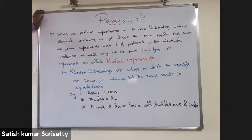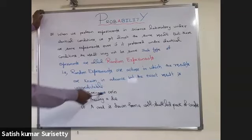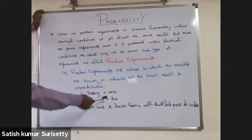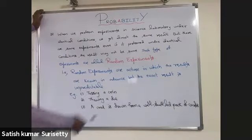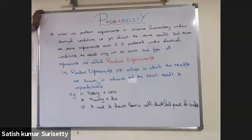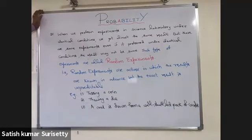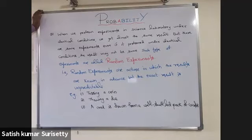Random experiments are actions in which the possible results are known in advance, but the exact result is unpredictable. For example, when tossing a coin, you know that either head or tail will come, but you don't know exactly which one. When throwing a die, you know a number from one to six will come, but not the exact number. Similarly, when drawing a card from a well-shuffled pack of 52 cards, you don't know which card will come exactly.